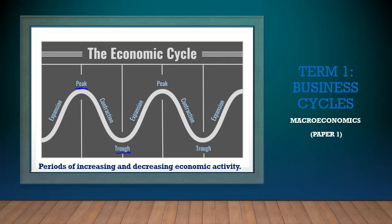From a peak to a trough you're going down — that's a downswing. A downswing is also called a contraction. The contraction phase itself has two parts: first the economy will experience a recession, and then things will get worse and the economy will experience a depression. Those are the two parts of a contraction.